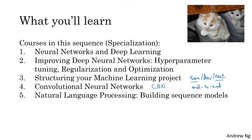Finally, in course five, you learn sequence models and how to apply them to natural language processing and other problems. So sequence models include models like recurrent neural networks, abbreviated RNNs, and LSTM models, which stands for long short term memory models. You learn what these terms mean in course five and be able to apply them to natural language processing problems.